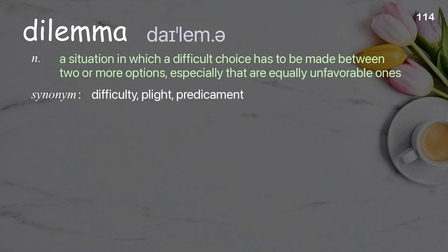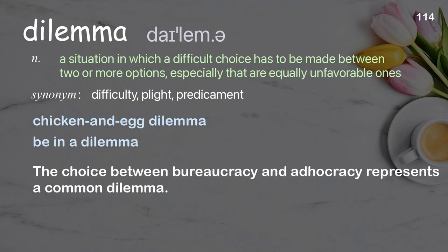Dilemma: a situation in which a difficult choice has to be made between two or more options, especially ones that are equally unfavorable. Examples: chicken and egg dilemma, be in a dilemma. The choice between bureaucracy and adhocracy represents a common dilemma.